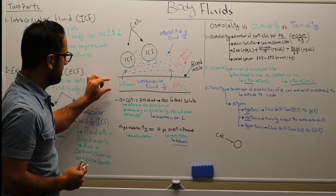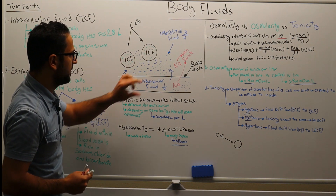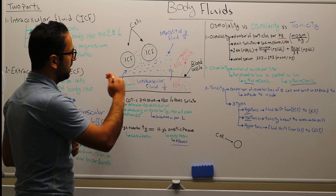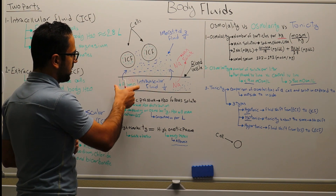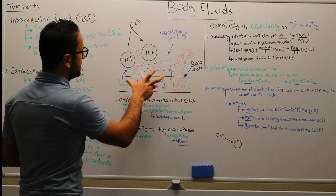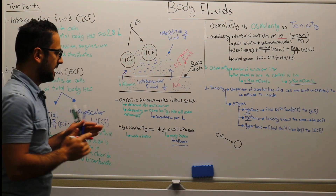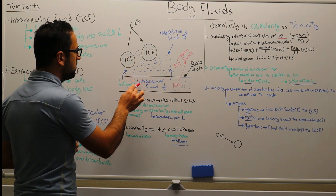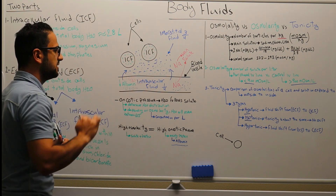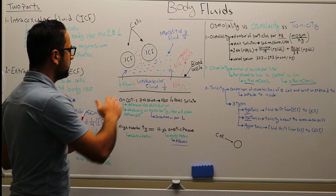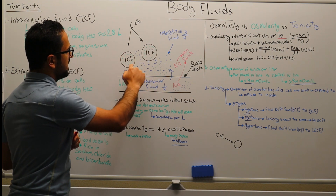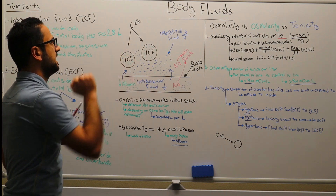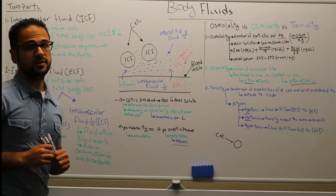Because we're having a low amount of albumin in the intravascular fluid, this means we're having a low concentration of solutes overall in the intravascular fluid. Since water follows solute, if we're having a low concentration in the intravascular fluid, water will actually move from the intravascular fluid to the interstitial fluid, due to the higher concentration in the interstitial fluid.